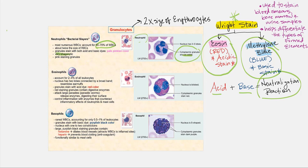The next type are the eosinophils. They account for about two to four percent of all leukocytes. Their granules absorb the red eosin stain, which is why they're referred to as eosinophils — look for those reddish cytoplasmic granules under the microscope. Their specialty is to attack large parasites such as parasitic worms, releasing enzymes that digest the worm's surface. They also control inflammation with enzymes that counteract the inflammatory effects of neutrophils and mast cells. Their nucleus tends to be bilobed.